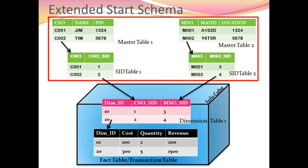The assignment of characteristics — such as customer number or material number — into a particular dimension ID is not done blindly. The assignment will purely depend upon their cardinality relationship. Let's have a look at it.